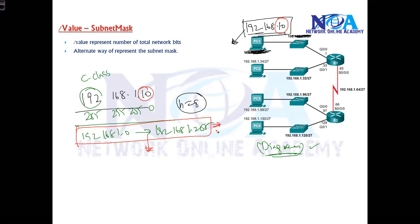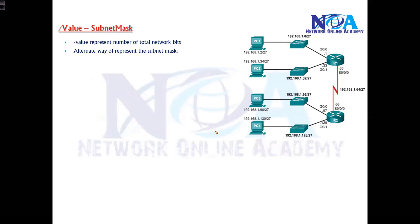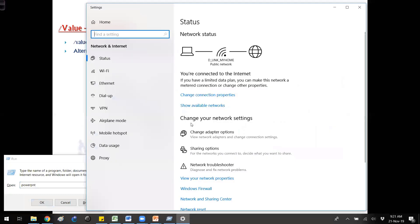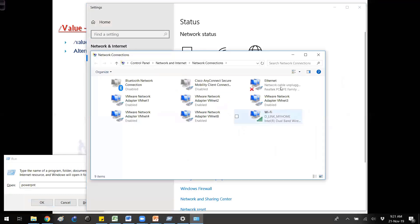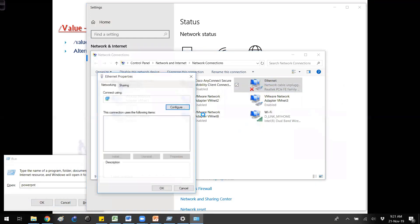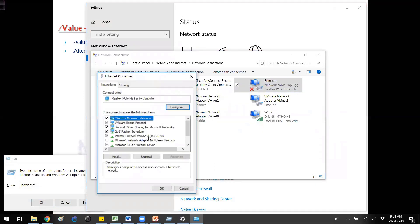This is what a device generally assumes if you don't provide the subnet mask. In computers we generally write the subnet mask, because if you go to network settings and view the IP address, without the subnet mask the device is not going to accept the IP address.